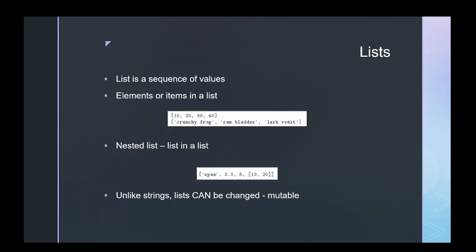Moving into our segment on lists: just like a string is a sequence of characters, a list can be a sequence of values of anything. We say a list has elements or items. For example, a list of 10, 20, 30, 40, or a list of strings like 'crunchy frog', 'ram bladder', 'lark vomit'. We can also have a nested list — a list within a list — containing mixed data types like a string 'spam', a float 2.0, an integer 5, and a sub-list containing 10 and 20.